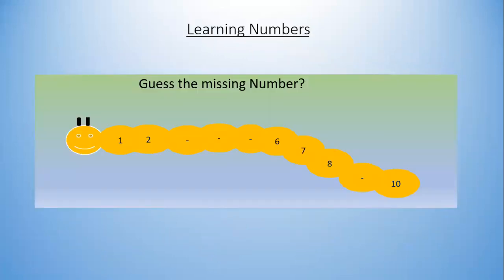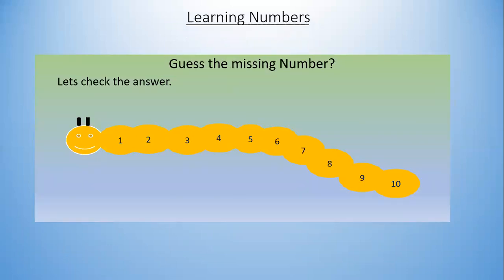Here is another fun activity — we have to guess the missing number. Let's count from one to ten: one, two — something is missing. Another number is missing, and one more is missing, then six, seven, eight, then another number is missing, and ten. Can you guess what those missing numbers are? Let's check: one, two, three, four, five, six, seven, eight, nine, ten — the missing numbers were three, four, five, and nine. You are right!